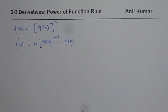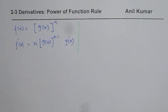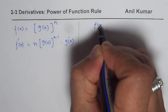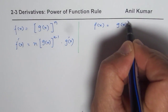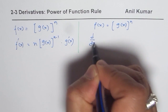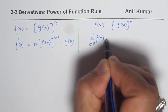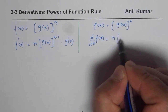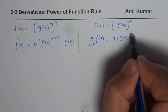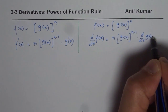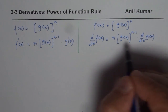So that is the power rule. This could also be written in another notation. If we have the function f of x equals to g of x to the power of n, then d/dx of f of x is equal to n times g of x to the power of n minus 1, times d/dx of g of x. So that is another notation in which you can write the same thing.